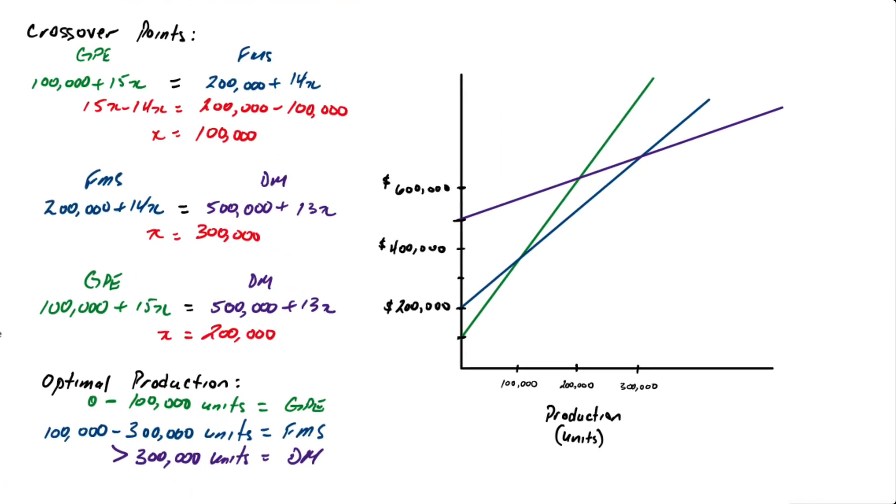If we were to draw these on a graph we would have something like this. On the vertical axis we have total cost and on the horizontal axis the production. You can see the green line representing GPE that crosses the y-axis at $100,000 representing the fixed cost. FMS crosses the y-axis at $200,000, that's the blue line. And then the purple line DM crosses the y-axis at $500,000. Now this isn't exactly to scale but it's good enough for our purposes.